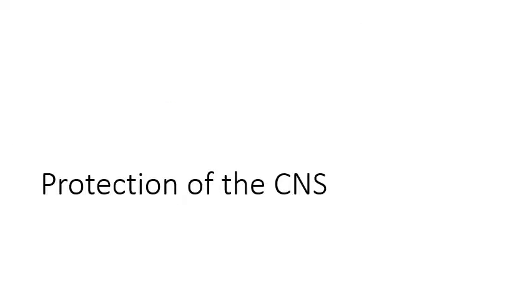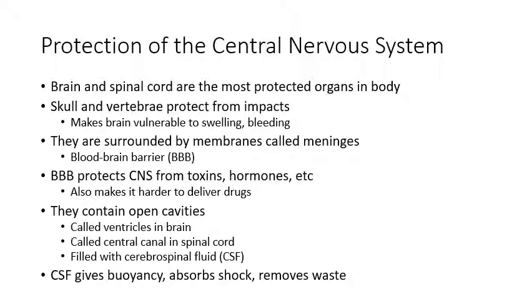Before we get into the central nervous system proper, we need to talk about what surrounds it and how it's protected. The brain and the spinal cord are actually the most protected organs in your entire body, because they're incredibly important. Most forms of homeostasis are regulated through the brain, as well as your ability to move through and interact with your environment.